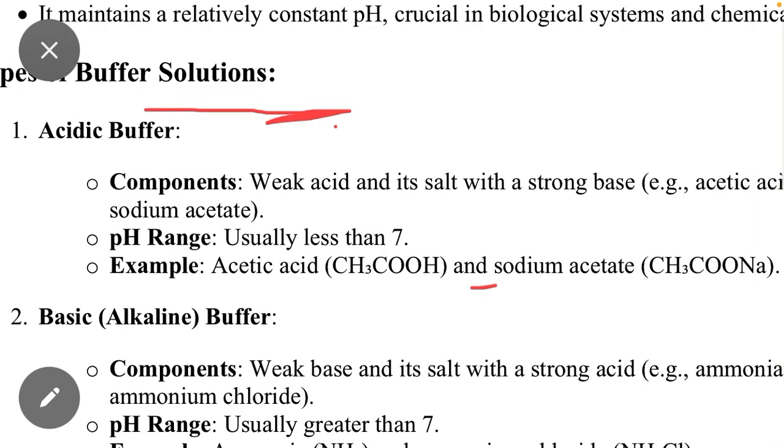The components for acidic buffer are a weak acid, for example acetic acid (CH3COOH), and its salt with a strong base. When we react acetic acid with a strong base like NaOH, a salt is formed: sodium acetate (CH3COONa). We have to combine the weak acid and its salt with strong base. When we add both of these, an acidic buffer is formed with a pH range less than 7.